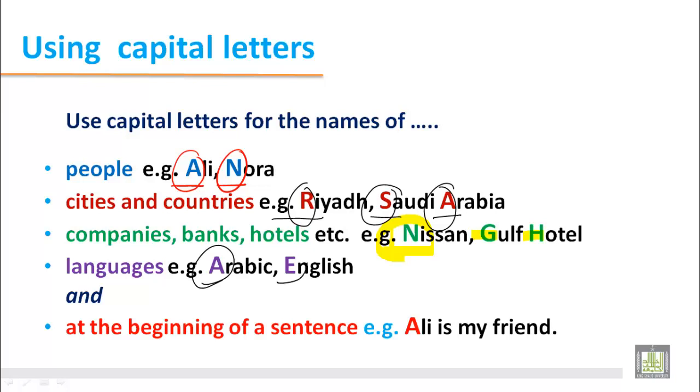At the beginning of a sentence — 'Ali is my friend' — the 'A' in Ali is capital. We can also write capital letters at the beginning of names of things, for example: 'Books are kept on a shelf,' where 'B' begins the sentence and is capitalized.